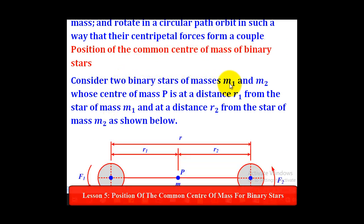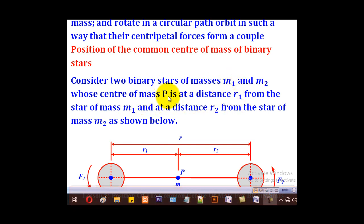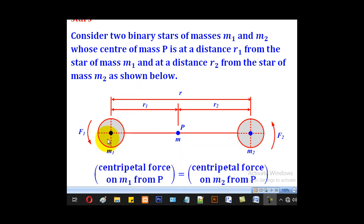Consider two binary stars of masses M1 and M2 whose center of mass P is at a distance R1 from the star of mass M1 and at a distance R2 from the star of mass M2, as shown below. These are the two binary stars and their movement forms a couple.